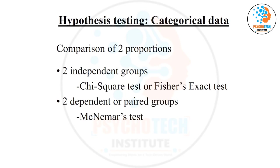T-test and Wilcoxon are gone — they don't apply here. Remaining: Chi-square test and McNemar test. Is the data paired? Cancer is independent, tobacco use is independent — no, it's not paired. So McNemar test is gone. What remains is Chi-square test. If the option is Chi-square, choose Chi-square. If the option is Fisher exact test, use Fisher exact test. This is the procedure to solve the problem.